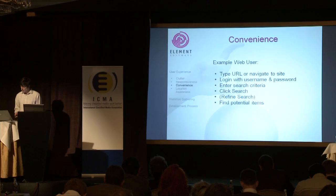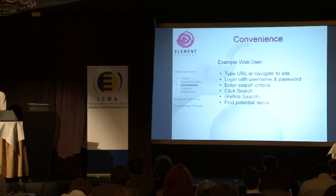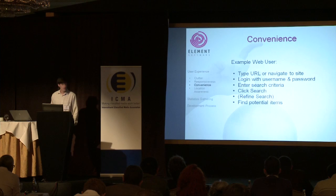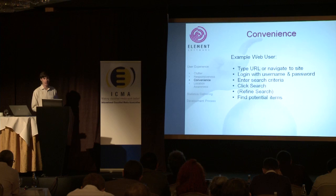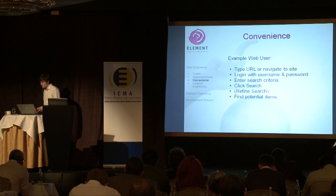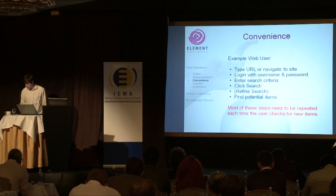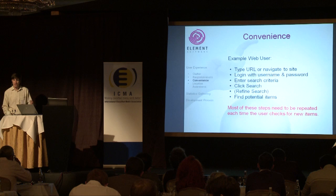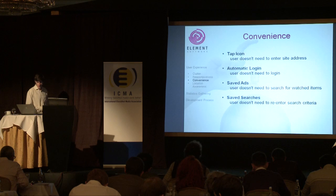Convenience — this is what it's all about, really, for mobile apps. We're going to look at a few ways to make things easier and faster for your users. Here we have a typical example of a user searching for something on a classified media website — type in a URL, possibly log in with username and password, enter criteria and find their potential items. The problem with this experience is that in a lot of cases, a lot of the steps need to be repeated every time the user wants to consult the same list of items. So how can the mobile app make this a better experience?